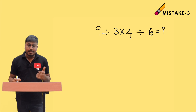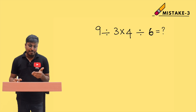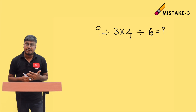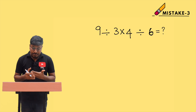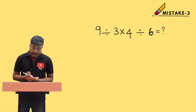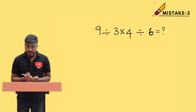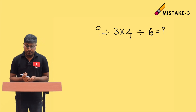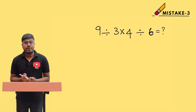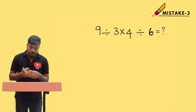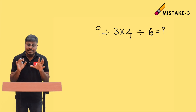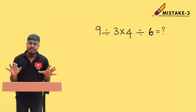This is video number three of the mistake series, on the topic of simplification. Look at this question: 9 ÷ 3 × 4 ÷ 6 = ? It's one of the easy simplification questions, but there's a very common mistake students make here.